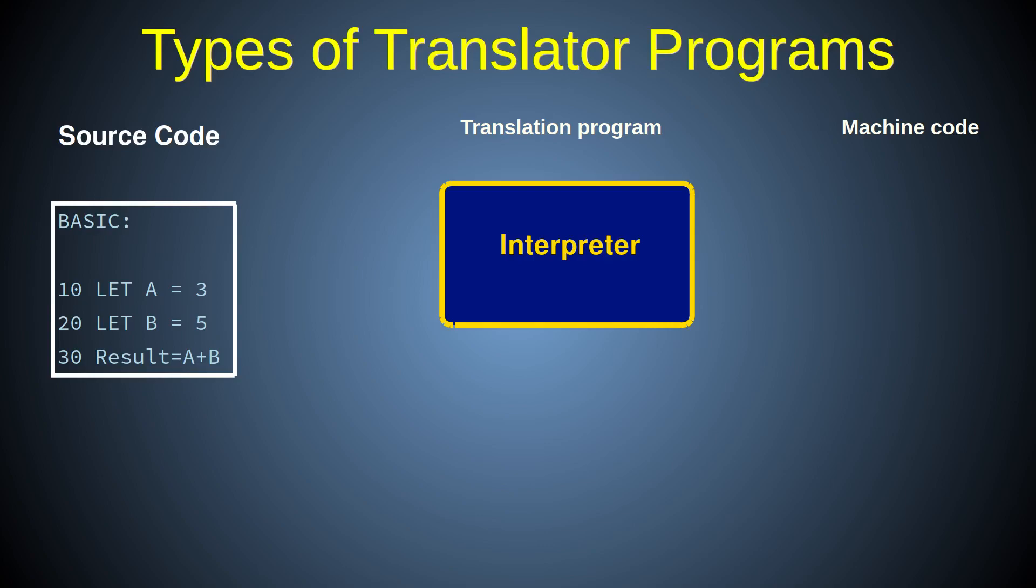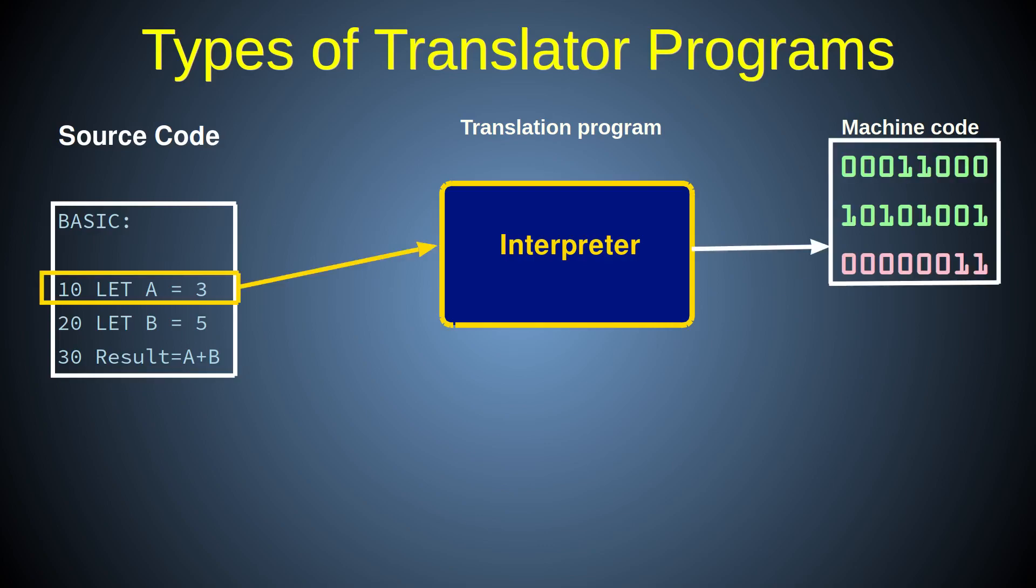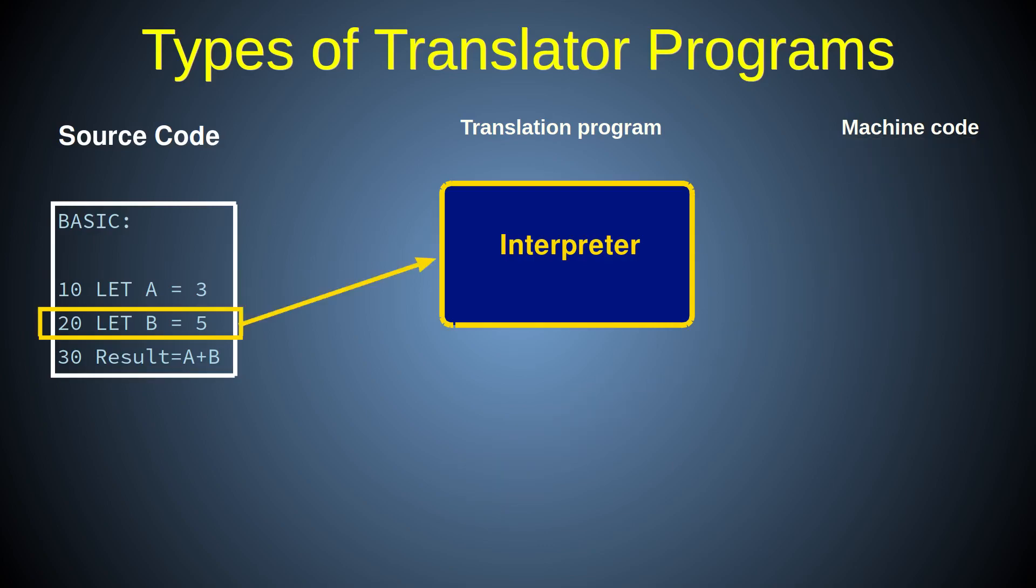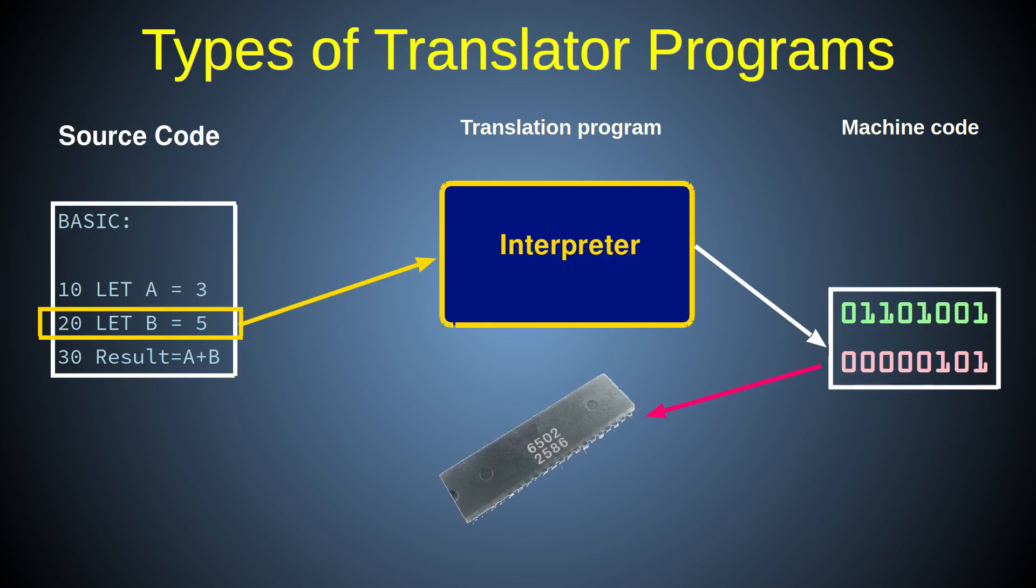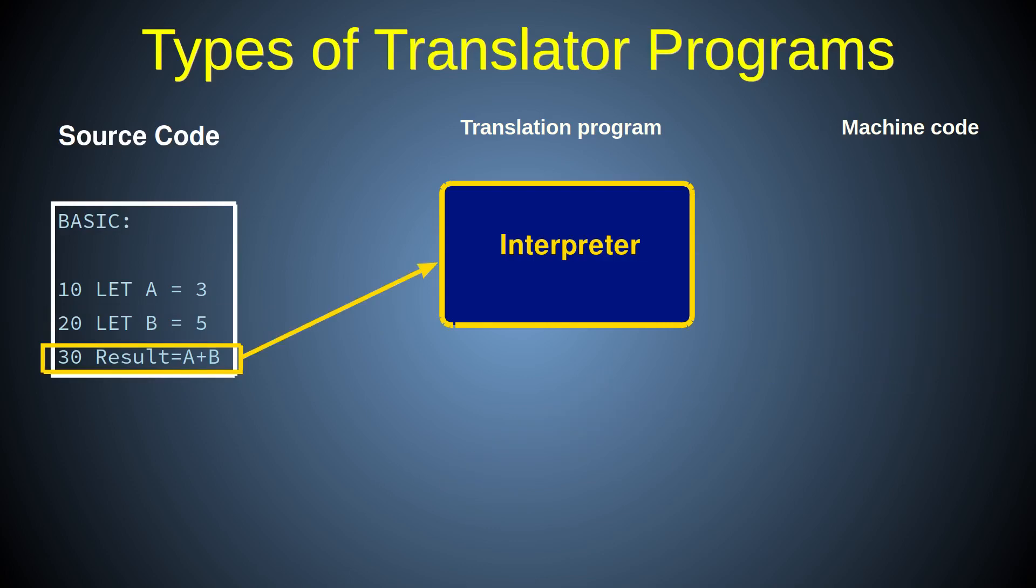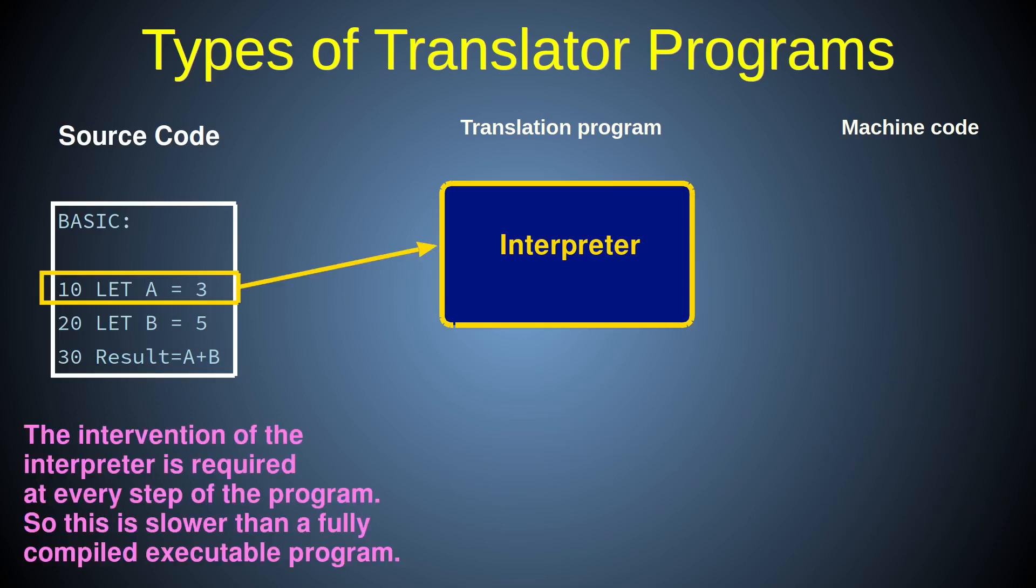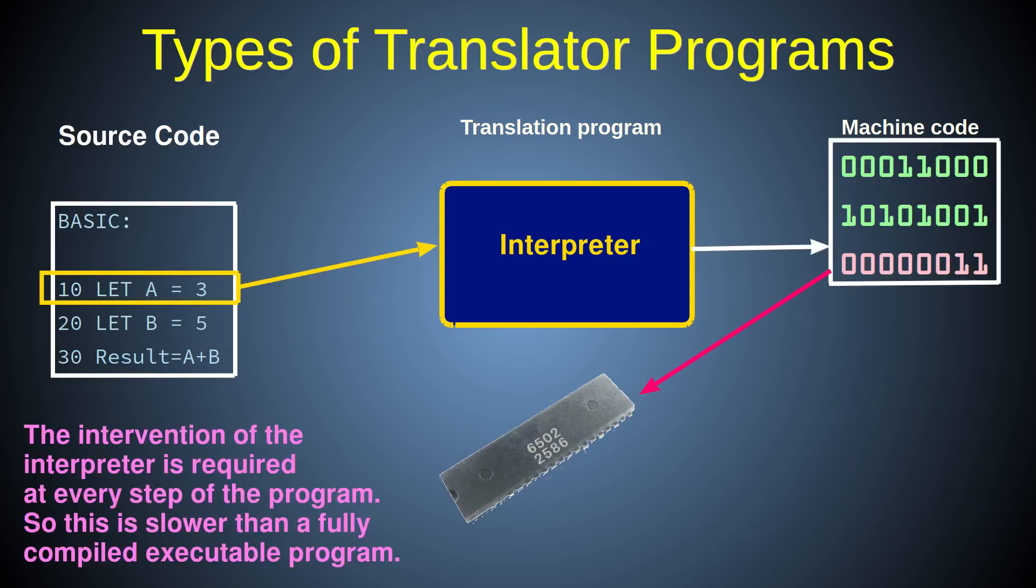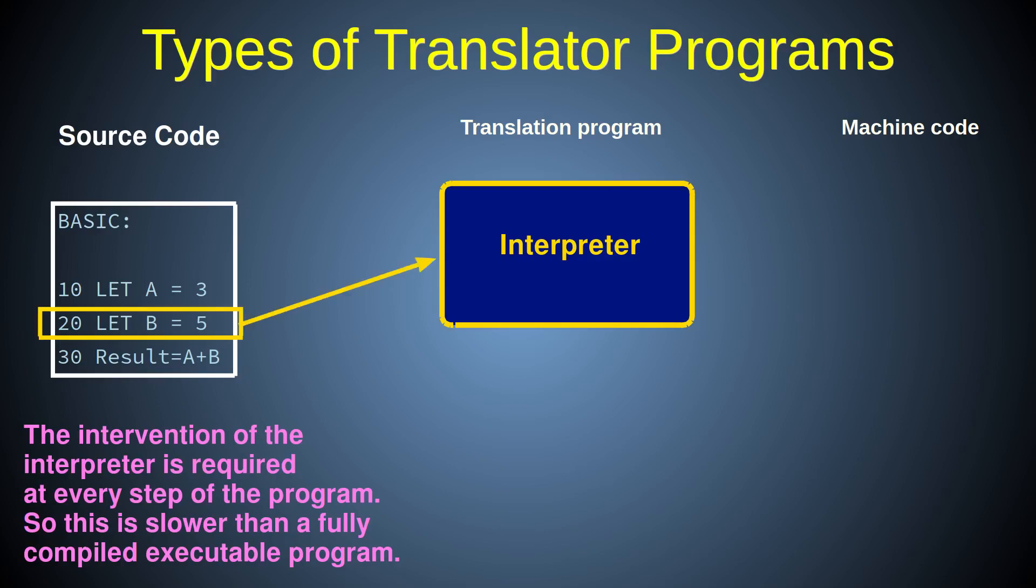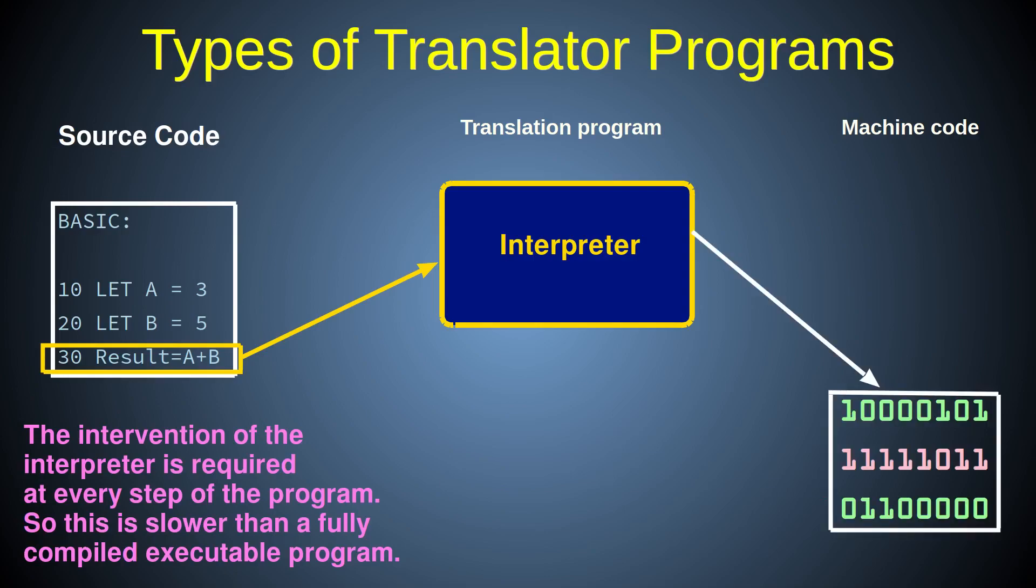An interpreter, on the other hand, reads the source code one piece at a time and translates that small piece of source code program into machine code, runs it, then comes back to the source code to get the next piece, and so on, till the program ends. This interpreter method is therefore generally a slower method of running a program compared to using a compiled machine code executable file.